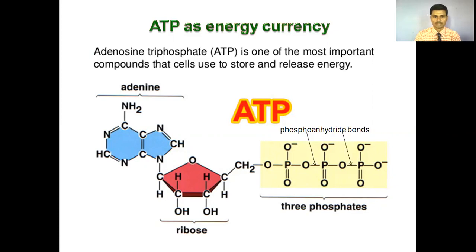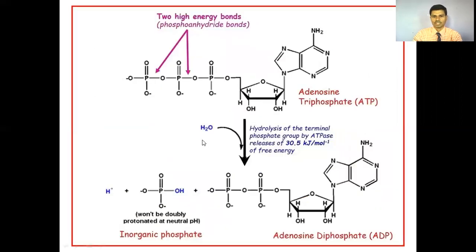ATP is composed of three main components: first, adenine — you can see here the ring of adenine — attached with the pentose sugar that is ribose. The ribose is attached with three phosphate groups, and the bonds present between these three phosphate groups are called as phosphoanhydride bonds. These phosphoanhydride bonds are highly energetic. If you do the hydrolysis, the terminal one phosphate group — by ATPase enzyme — releases the energy of 30.5 kJ per mole.